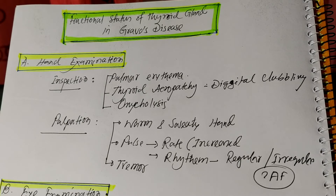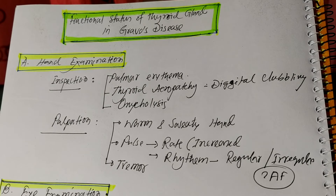On palpation of the hand, the hand appears warm and sweaty on handshake. The pulse is very important — it may be increased, more than 120 beats per minute, and the rate may be regular or irregular. If irregular, it may indicate atrial fibrillation.